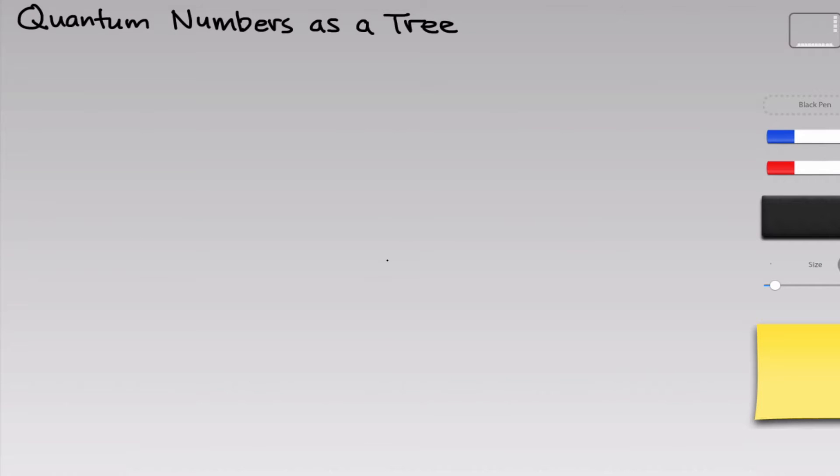Here I'm going to present a different way of thinking about the quantum numbers that uses a tree format. At the root or base of the tree, we can think of the principal quantum numbers: n equals 1, n equals 2, n equals 3, etc. And I'm just going to look at the first three shells here.